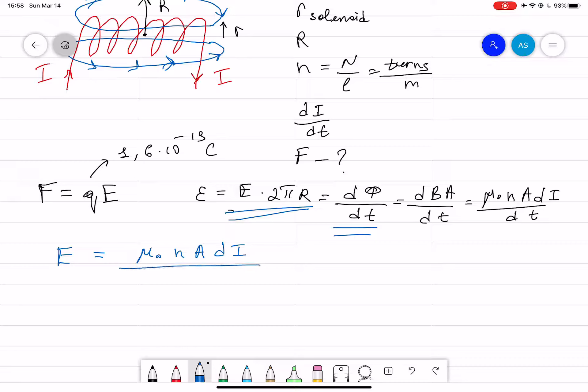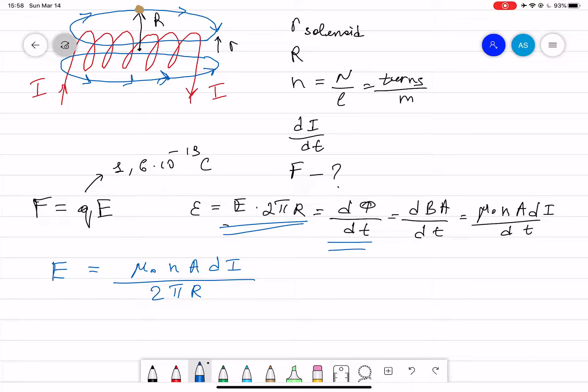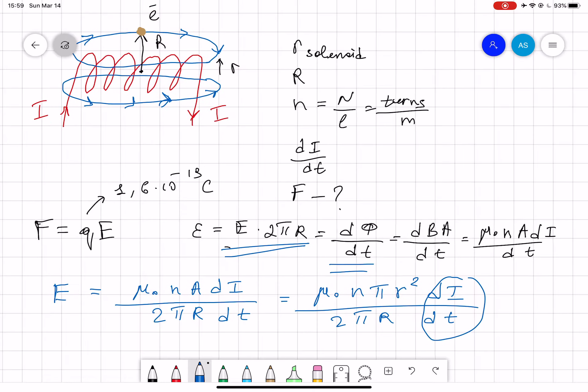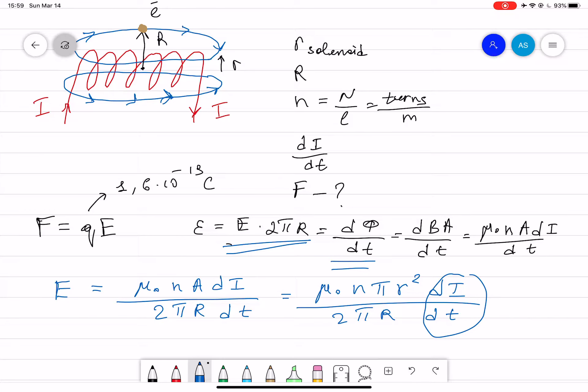dI divided by 2πR (this is R distance where electron is located) divided by dt. The area is equal to what here? So μ₀n times area is πr² dI divided by 2πR dt. dI over dt is given, small r is given (radius of the solenoid), π is given, n is given, μ₀ is given, and capital R is also given.